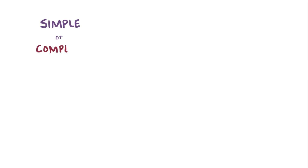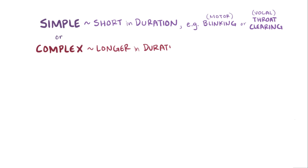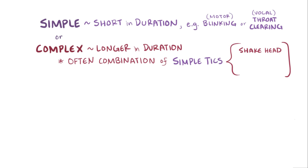Tics can be simple or complex. Simple tics are relatively short in duration, lasting milliseconds, and can include behaviors like eye blinks, which would be motor, or throat clearing, which would be verbal. Complex tics usually last longer, sometimes over a second, and are typically a combination of simple tics, like shaking one's head while shrugging the shoulders.